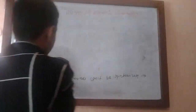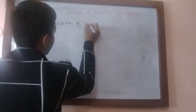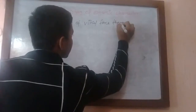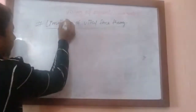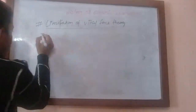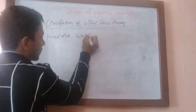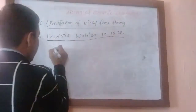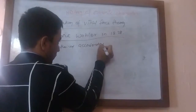Now let's talk about the limitation or drawbacks of vital force theory. This is also important. The next scientist, Friedrich Wöhler, in 1828, accidentally synthesized urea in the lab.